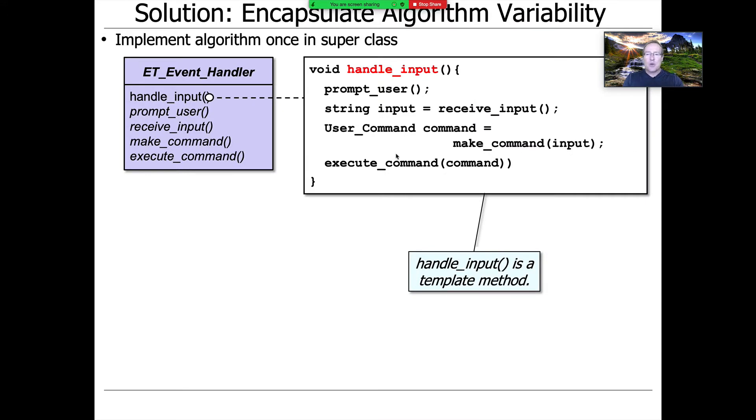So how are we going to do that in this case? We're going to implement the key algorithm in our program once in a super class or base class. We're going to have a class called ET for expression tree event handler, and it's going to have a method called handle input.